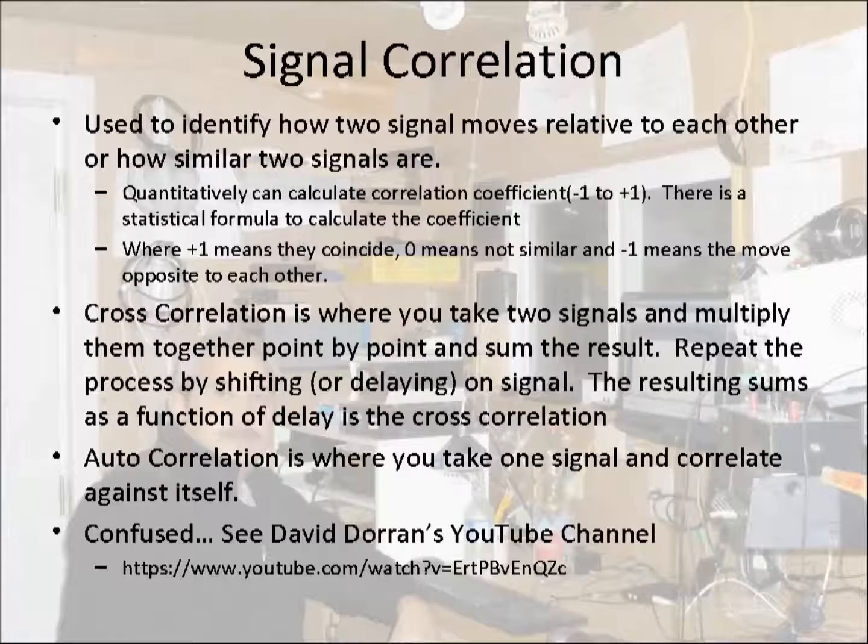So correlation is a mechanism used to identify how similar two signals are. If the signals are very similar, then the correlation result is positive and large. If there is no correlation, the result is zero. If the signal moves opposite to each other, then the correlation is negative and large. I use cross correlation where two signals are multiplied point by point and summed. The signals are shifted and the process repeated. The sums versus the delay or shift is used to identify the frequency and the phase shift.